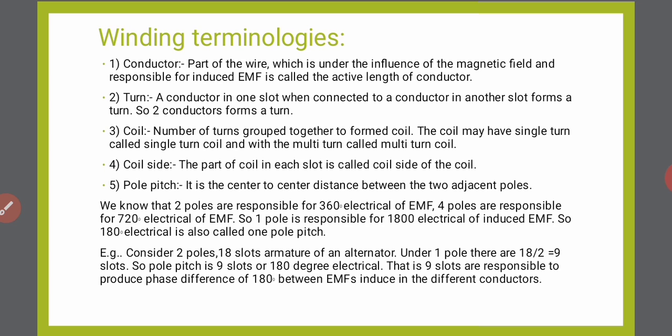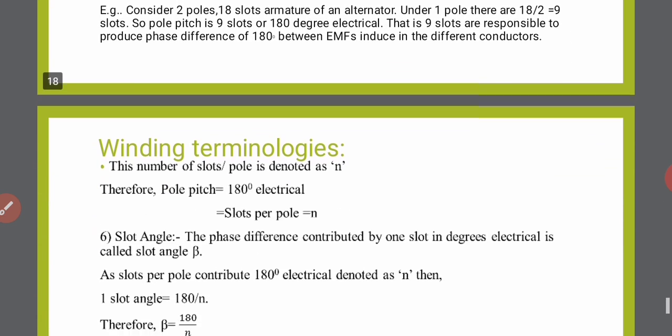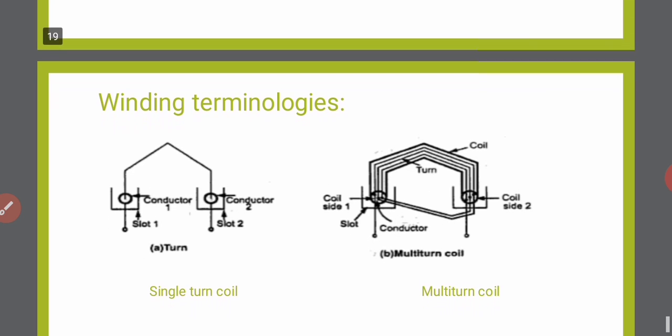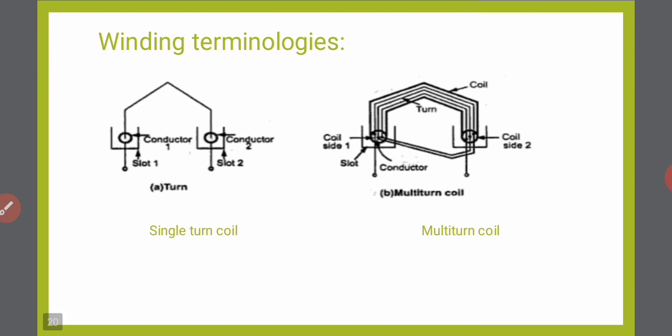What is a conductor? It is the part of a wire which is under the influence of a magnetic field and which is responsible for induced EMF — this is called the conductor. As you can observe in the figure, conductor 1 is placed in slot 1 and conductor 2 is placed in slot 2. The conductor refers to the active length of the wire under the influence of the magnetic field, and because of that influence the EMF will be induced inside the wire.